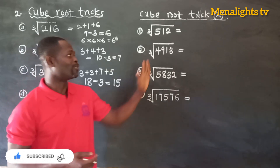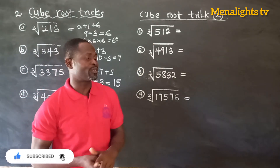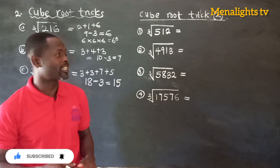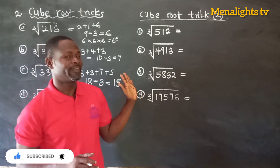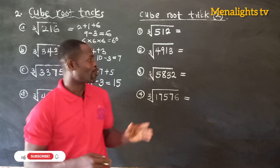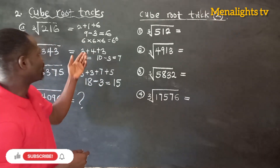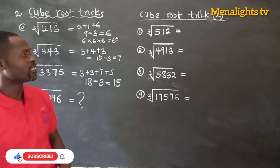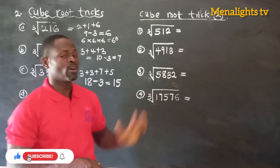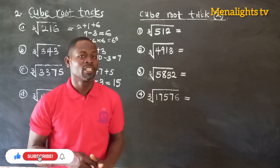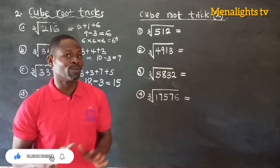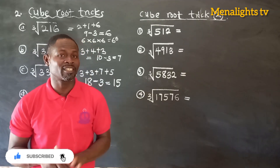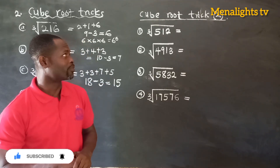Let's look at the second cube root trick. With the first trick, we add the numbers and then subtract the cube root value from it. With this second trick, we are not going to subtract anything — we are just going to add the digits.